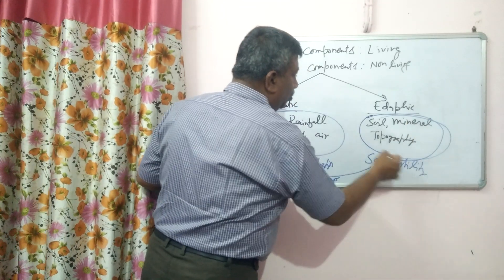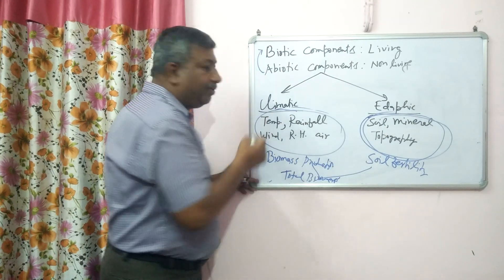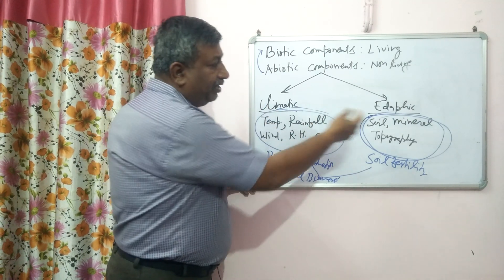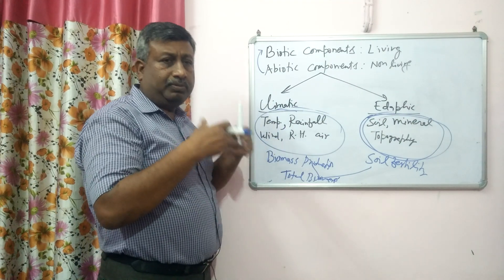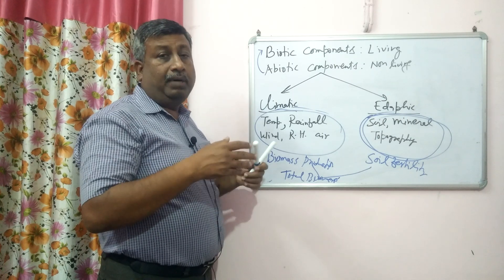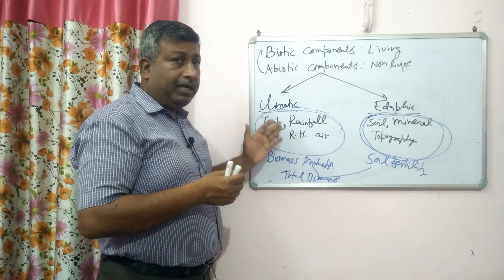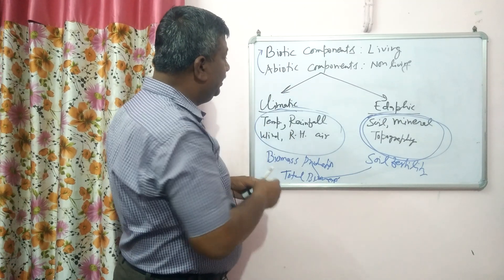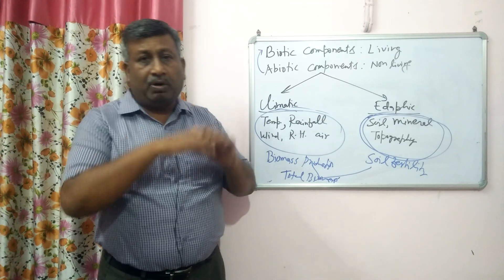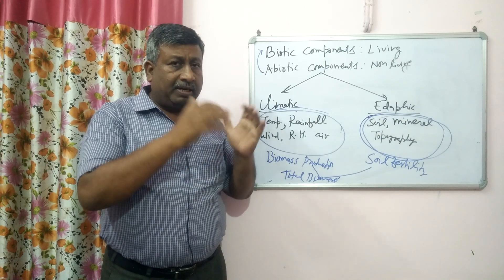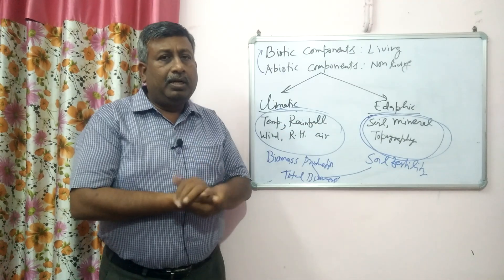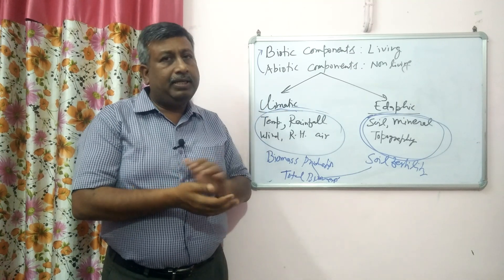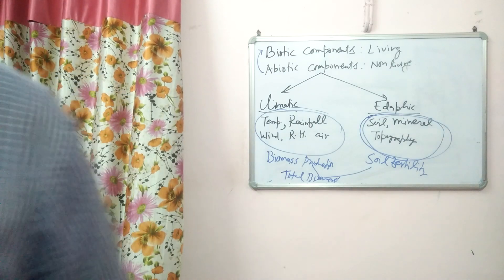Plant growth and soil fertility decide how much photosynthesis is happening. For example, in a desert, temperature is very high, rainfall is very low, biomass production is less, and soil fertility is very poor — so total biomass production is very less. In a tropical rainforest, temperature and rainfall are very good, plant growth is very good, and total biomass production is very high. That is why abiotic components affect biotic components. Productivity of the ecosystem, species richness, and organism activity are all affected by abiotic components. This is the relation between abiotic and biotic components in an ecosystem. Broadly there are two components: biotic and abiotic. Thank you very much.